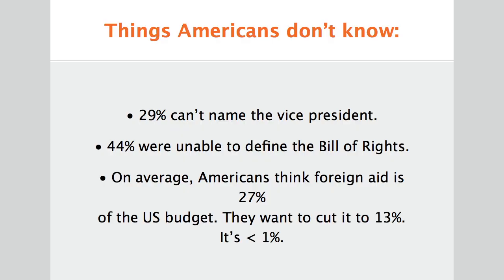And of course, this isn't just a problem of informedness about foreign affairs. Americans are pretty poorly informed about domestic affairs as well. 29% of Americans can't name the vice president. 44% can't define the Bill of Rights. Americans want to cut foreign aid from what they think it's at, about 30%, to about 14% of the budget. Actually, it's way less than 1%. We have this real challenge of informedness.